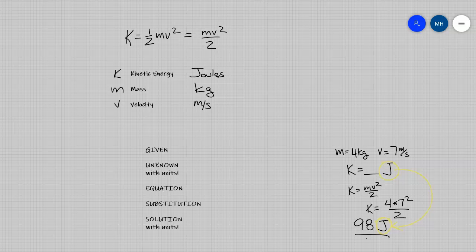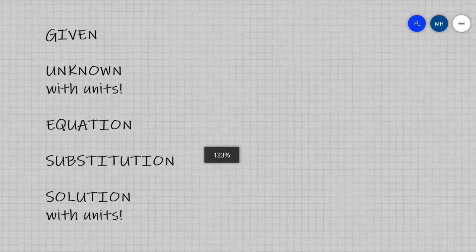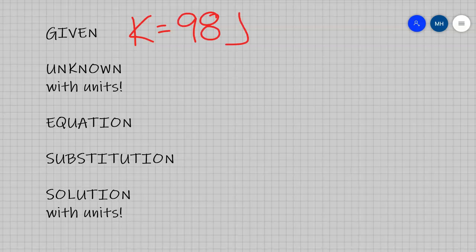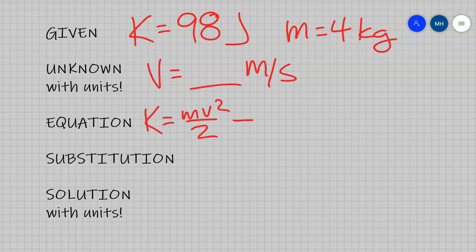One more thing we need to talk about is what if I ask you to solve for velocity. Let's look at the same values: a kinetic energy, and I gave you a mass. What we're going to look for is velocity. The equation we're going to use is the rearranged formula, the square root of two times K over m.